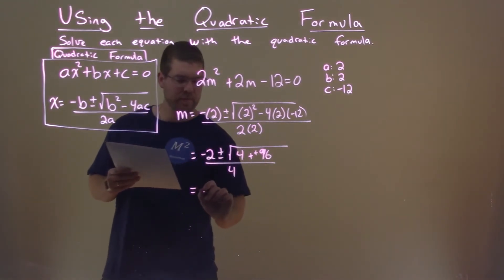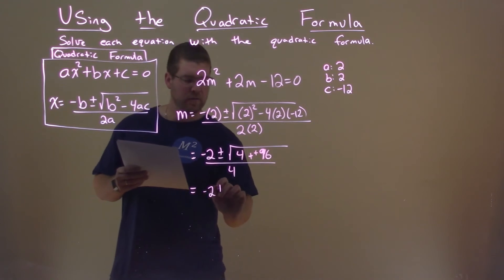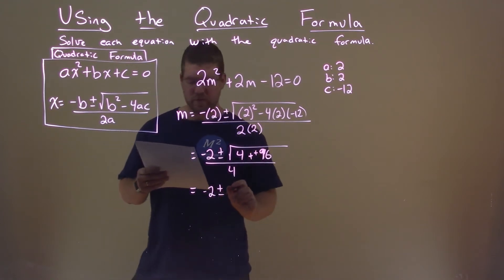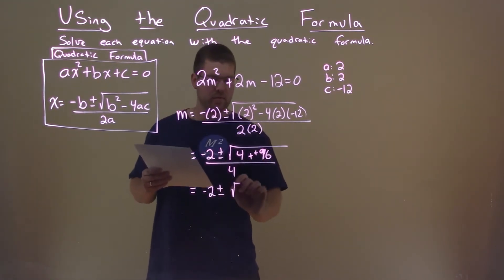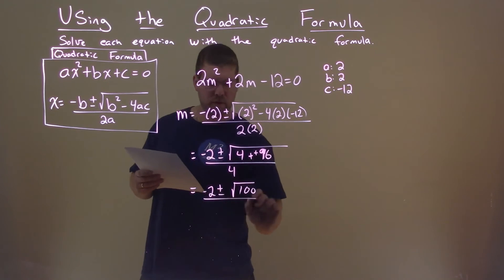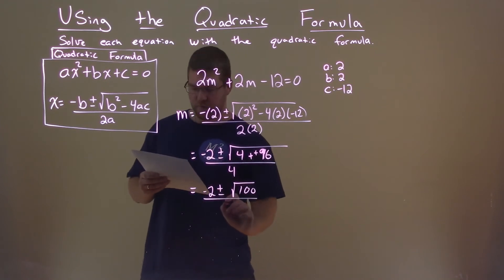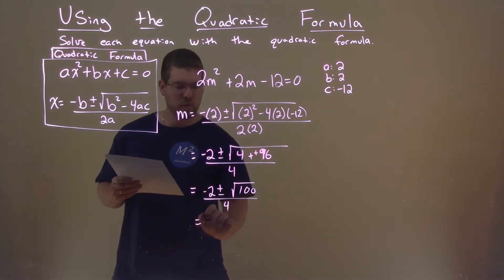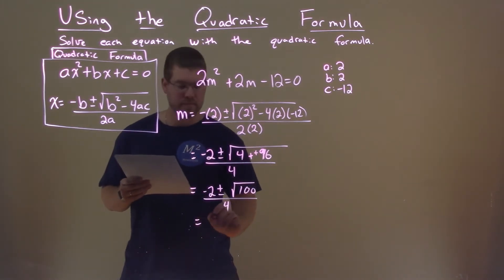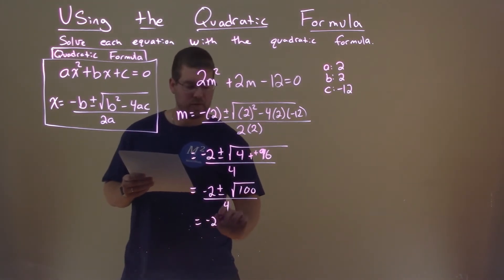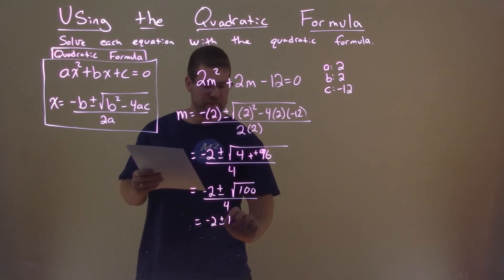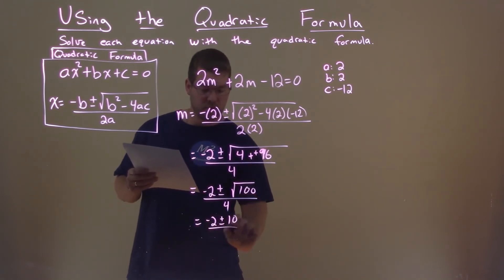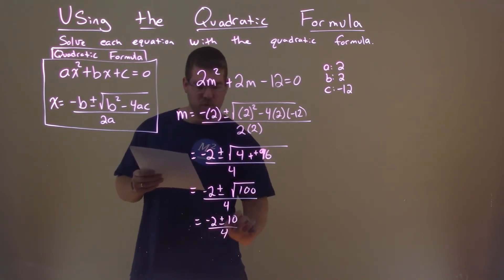Keep on going. Negative 2 plus or minus — 4 plus 96 is 100 — divided by 4. Well, what's the square root of 100? Negative 2 plus or minus the square root of 100, which is 10, over 4.